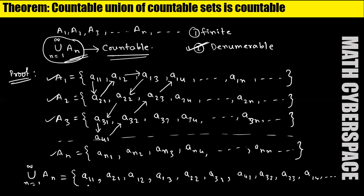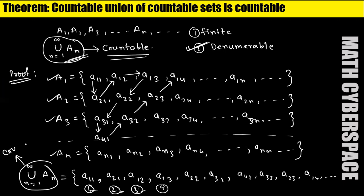Here we can call a11 the first element, a21 the second element, a12 the third element, a13 the fourth element in this union set. That means the elements of this union set are forming a one-to-one correspondence with the natural numbers. So we can say that this union set is countable. Hence I have proved that the countable union of countable sets is countable.